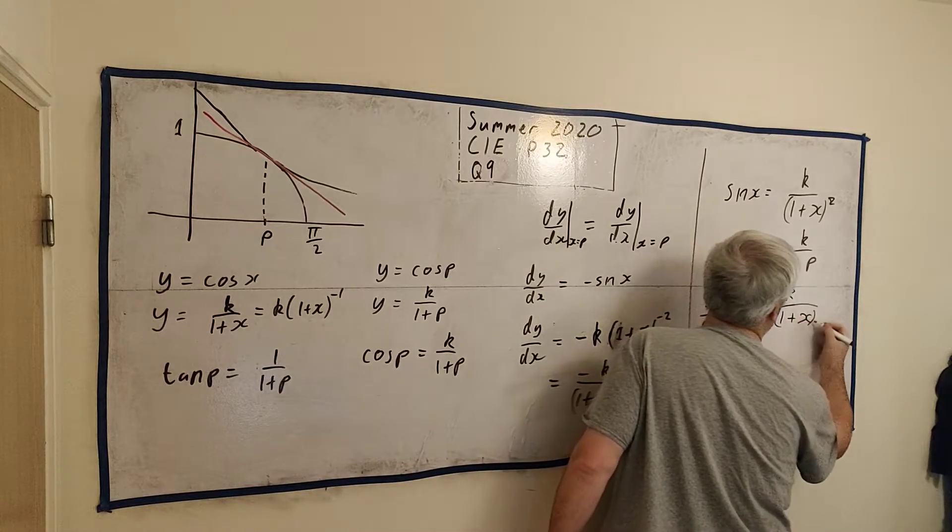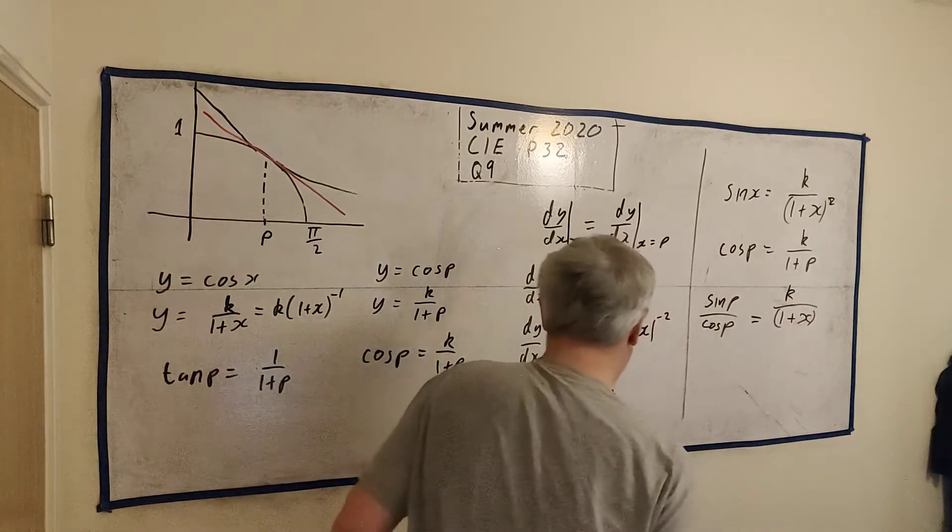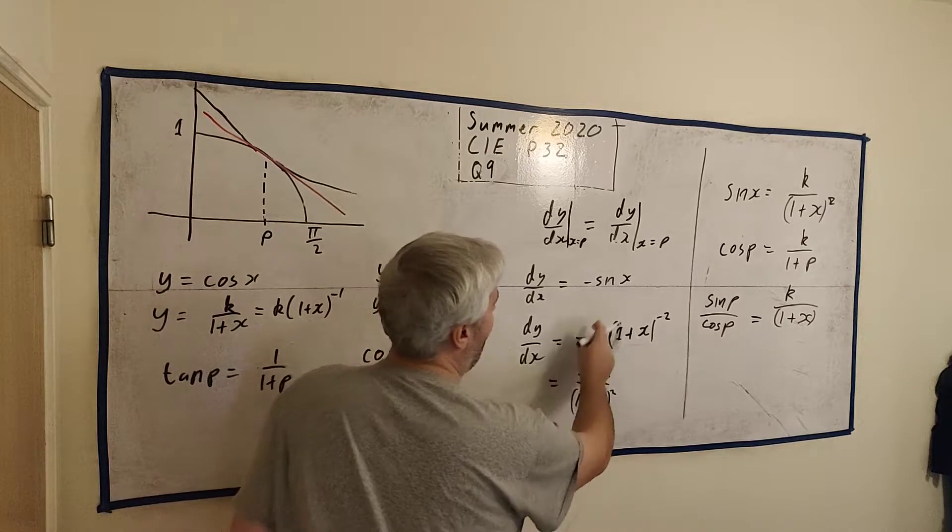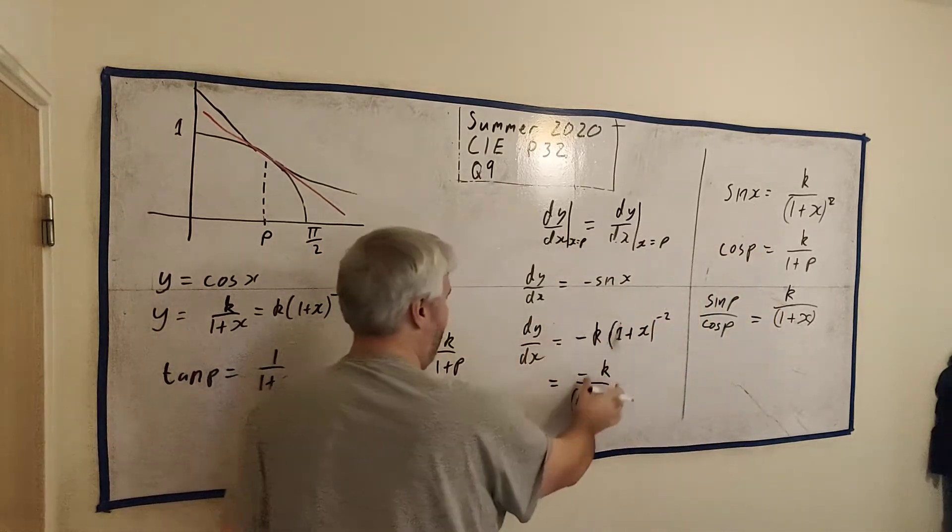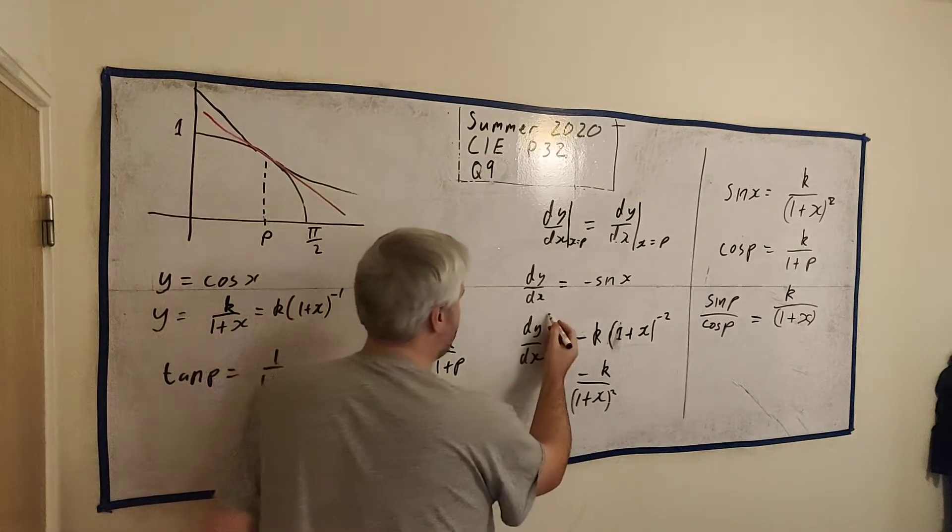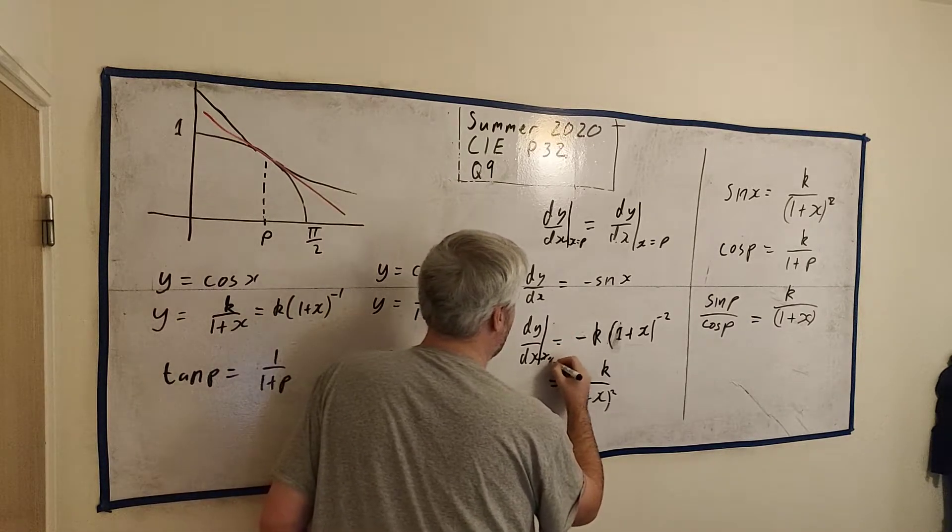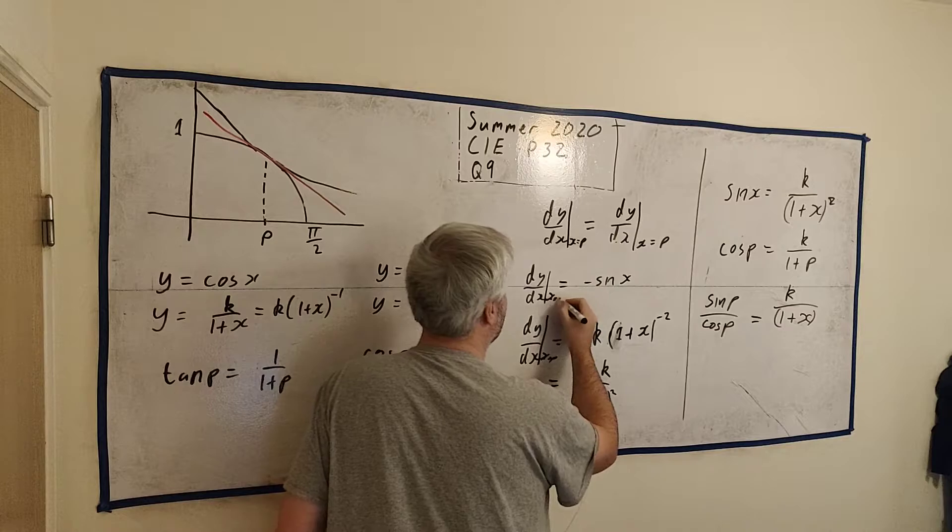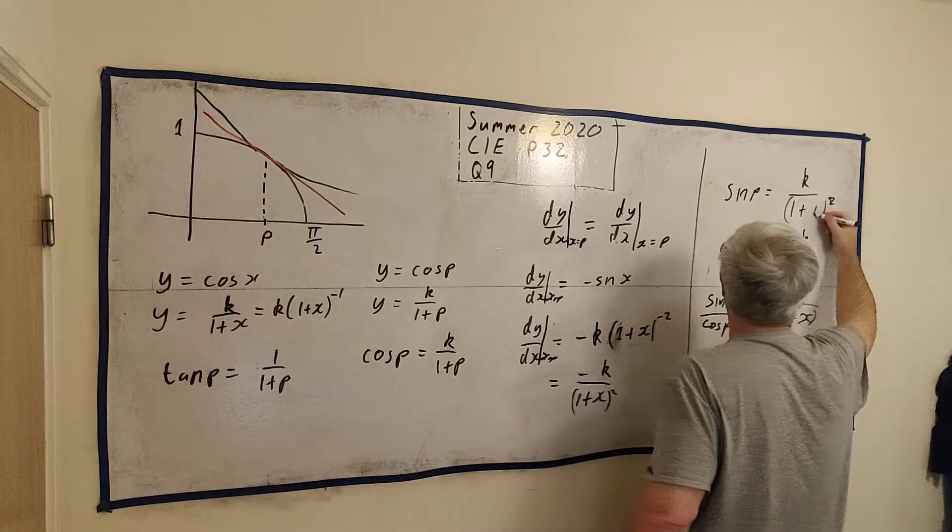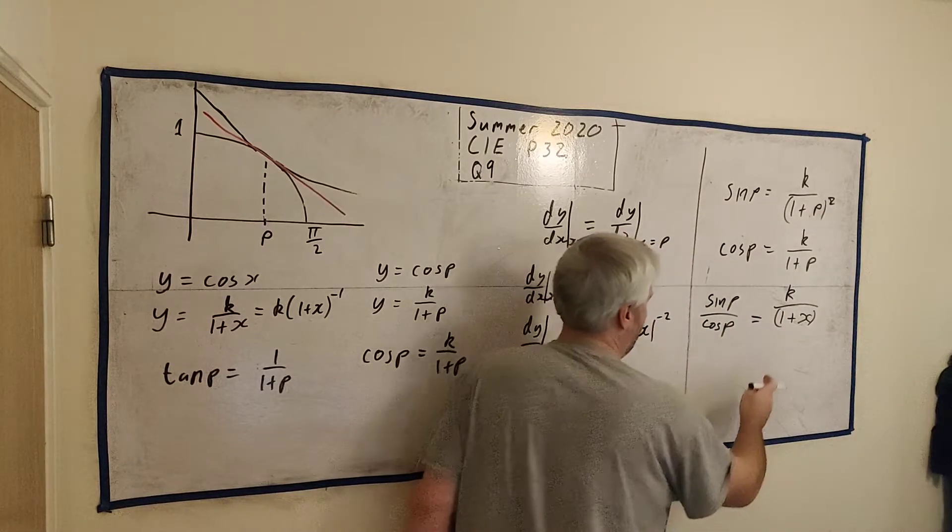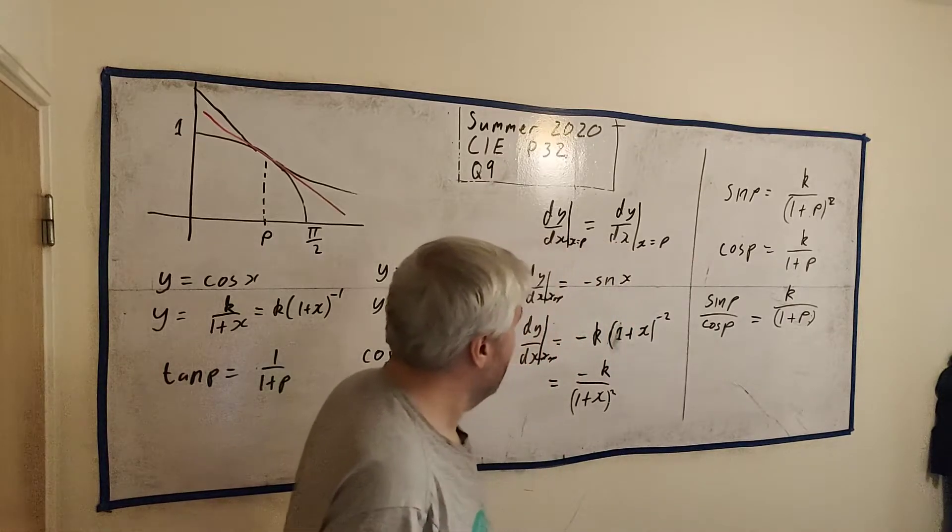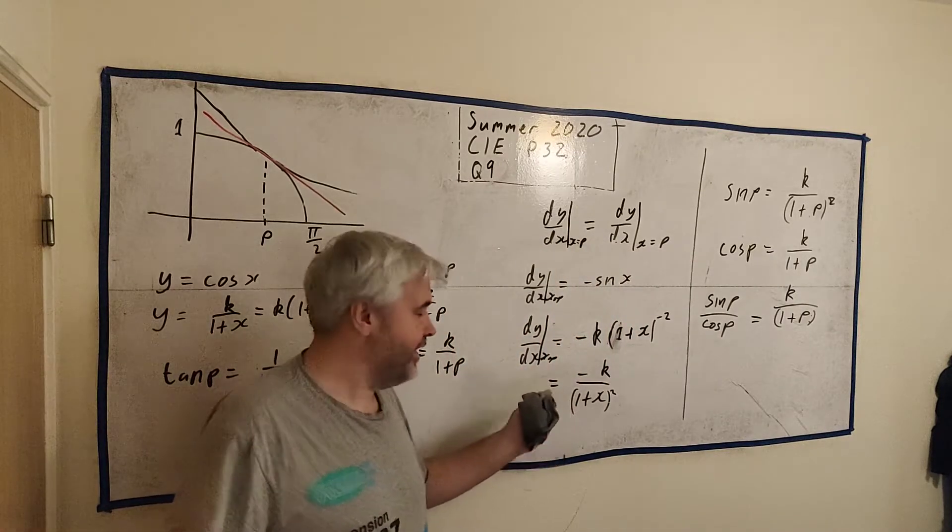So sine divided by cosine must equal to this divided by this. So let's see, I need a bit of room for this one. 1 plus x. Sorry, when did my x start appearing? I left my x in the whole way. I should be putting p in these points, shouldn't I? This is the derivative when x equals p. The derivative when x equals p. Let's just change it up here. Sine p. And we put a p in here. And we put the p in here. This is only true when x equals p.